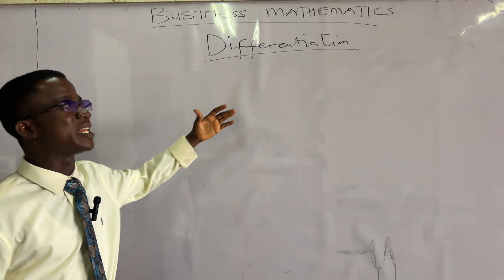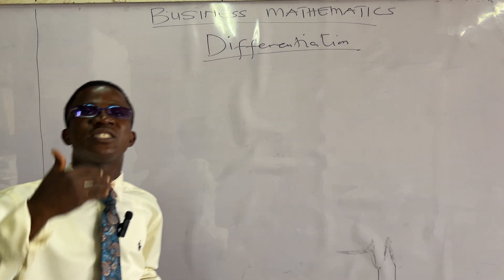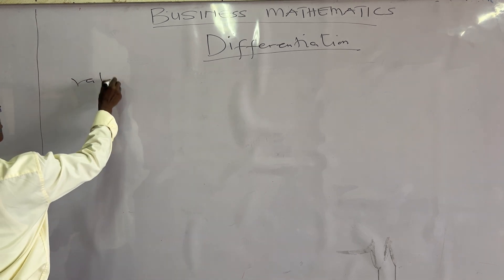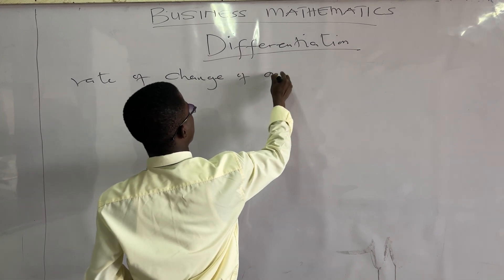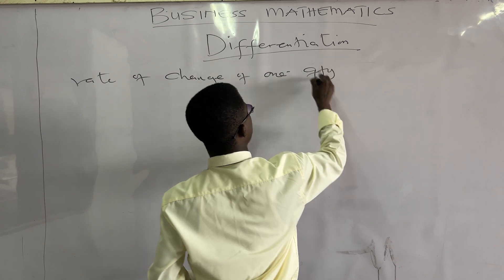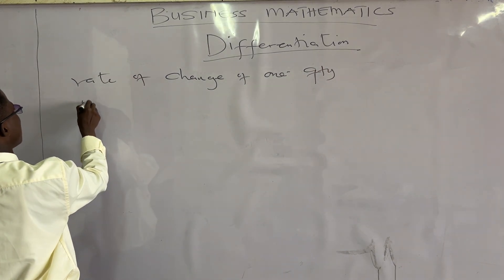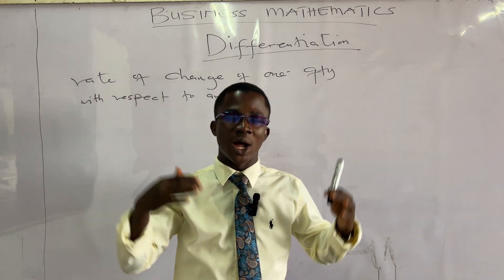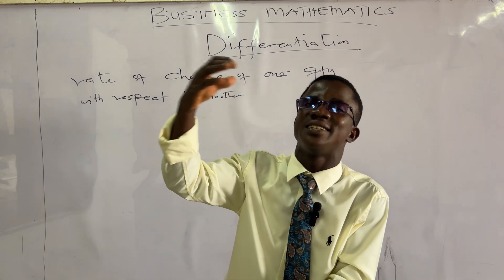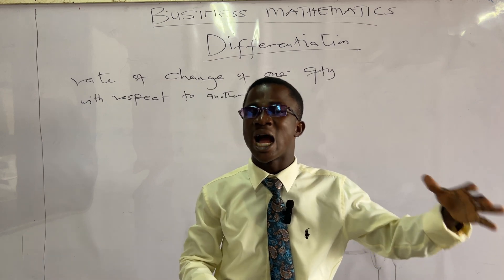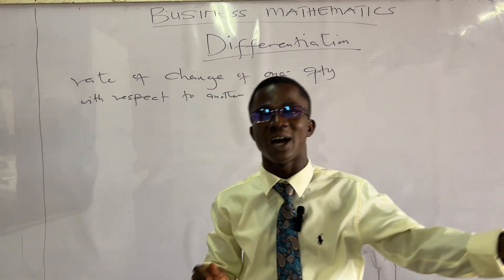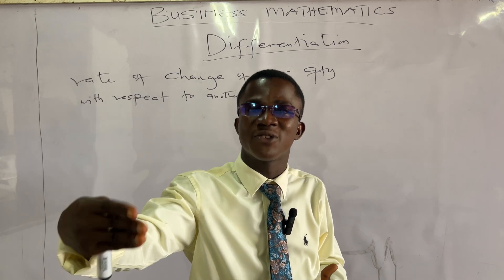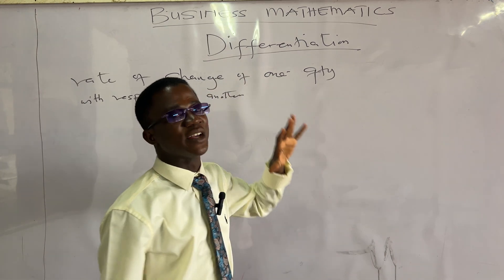When we talk about differentiation, we are saying that we want to find the rate of change of one quantity with respect to another quantity. So differentiation simply means the rate of change of one quantity with respect to another. When we talk about differentiation, we just want to know how one quantity changes with respect to another. For example, if you are saving at the bank, how does your money grow with respect to time? Or if you are covering a particular distance, what is the rate of your coverage of that distance with respect to time? That is answered by differentiation.